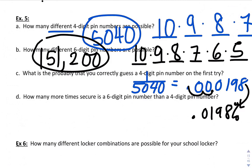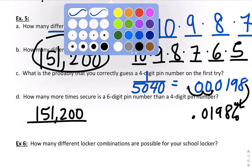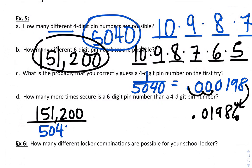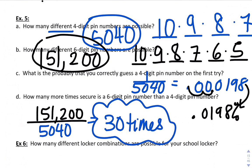How many more times secure is a six-digit PIN than a four-digit PIN? So if we take our 151,200, divide it by our 5,040, it's about 30 times more secure. Really, because we're multiplying it by 30 more here.